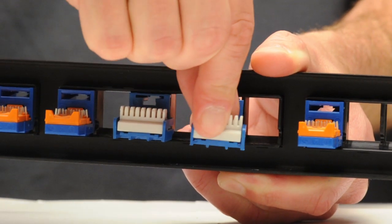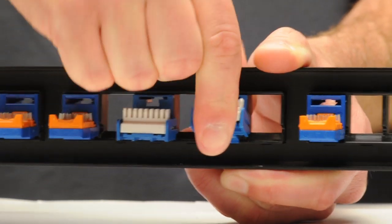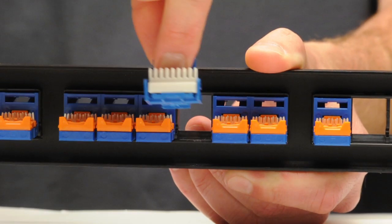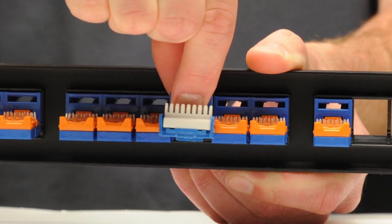Standard sized jacks will not be able to fit into adjacent ports and will have to skip spaces. Here you can see high density keystone jacks side by side, but standard jacks won't fit.